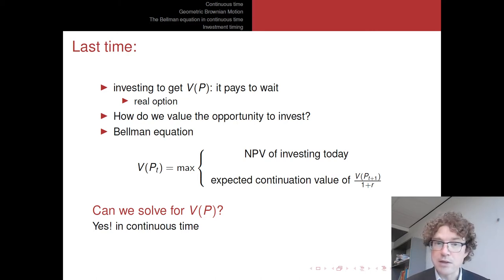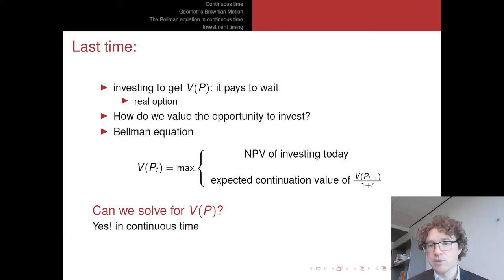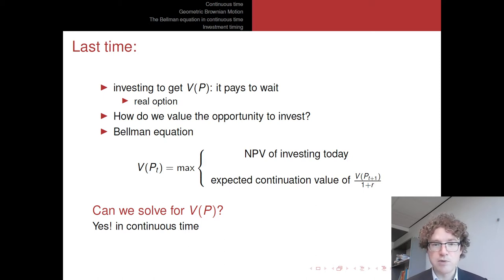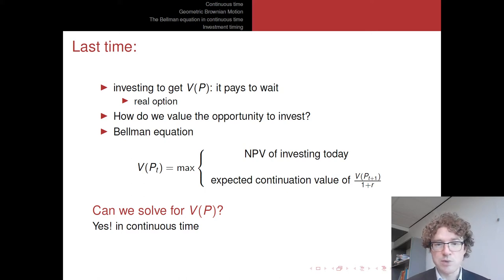We wondered how shall we value this opportunity to invest. We introduced basically the Bellman equation. This Bellman equation says: what's the value of making this investment? Well, it depends on today's price — for a higher price, we'll probably be more likely to make this investment today. At each moment in time, at each time step T, we'll be comparing what is the value that we get if we invest right now — that's the NPV essentially — and compare this with what happens if we wait one time step.